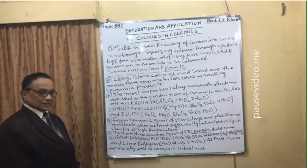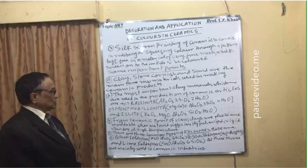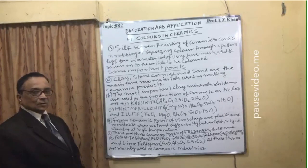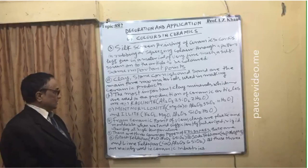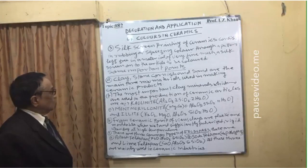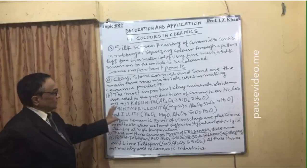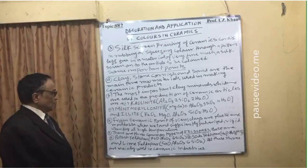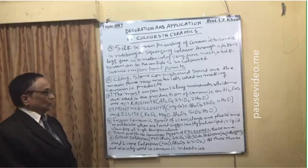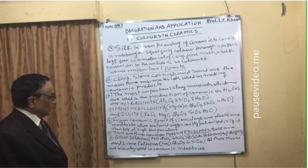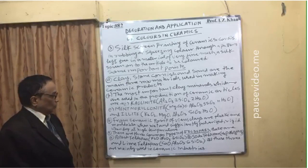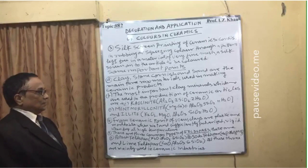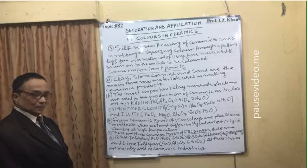The third clay mineral is illite, whose formula is K2O · MgO · Al2O3 · SiO2 with water of crystallization. These minerals are used in the ceramic industry. From a ceramic point of view, clays are plastic and moldable when wet and sufficiently pulverized, but become rigid when dry at high temperature.